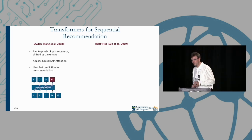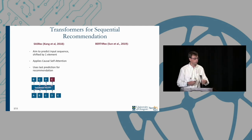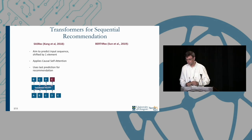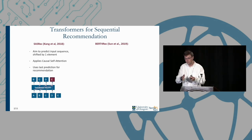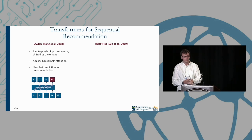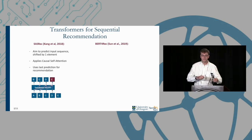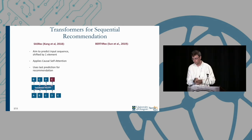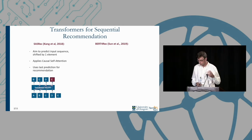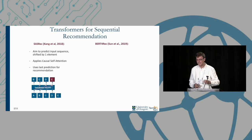SASREC and BERT4REC are two transformer-based recommender models. SASREC aims to predict the input sequence shifted by one element. It uses causal self-attention, so the attention focuses only backwards towards what's previously been shown to the model. And we use the last item for prediction.